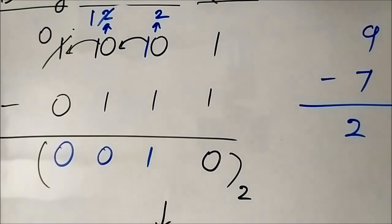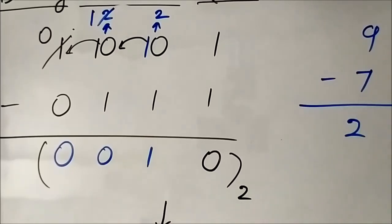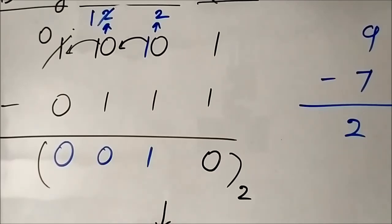Practice more problems on binary subtraction to get a firm hold of this concept — especially how to borrow a 1 bit so that 0 becomes 1 0, think of it as 2, and then perform further subtraction and borrow operations to get the result. I hope you liked this video. Please subscribe to Engineering Tutorial for more videos related to electrical, electronics, instrumentation, and communication engineering. Have a great day, thank you very much.